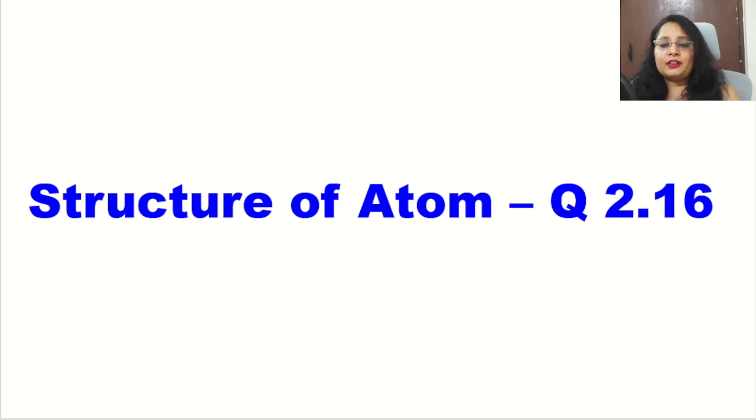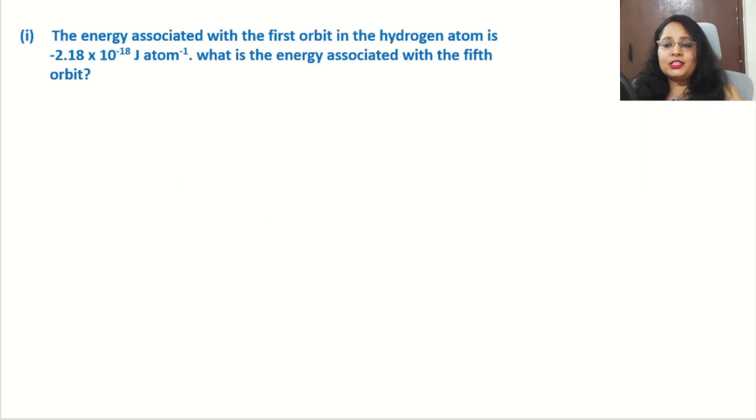Let's find the question. There are two parts. First part: the energy associated with the first orbit in the hydrogen atom is -2.18 × 10^-18 joule per atom. What is the energy associated with the fifth orbit?